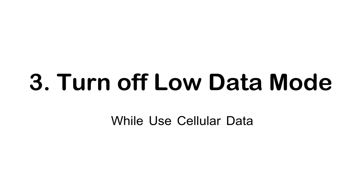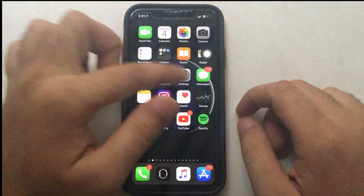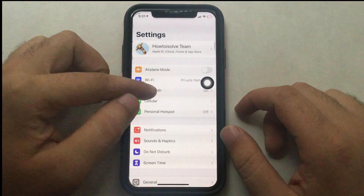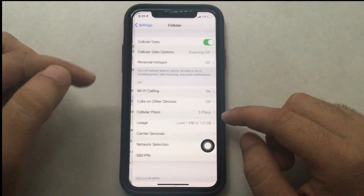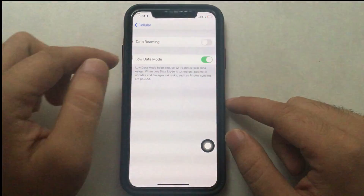The next solution is based on cellular data mode. Some iPhone users shared that they were using cellular data mode and sending blurry pictures in iMessage. I found one interesting option under cellular data. Open the Settings app, scroll to Cellular, then tap Cellular Data Options. Here you will find Low Data Mode — keep this option disabled.